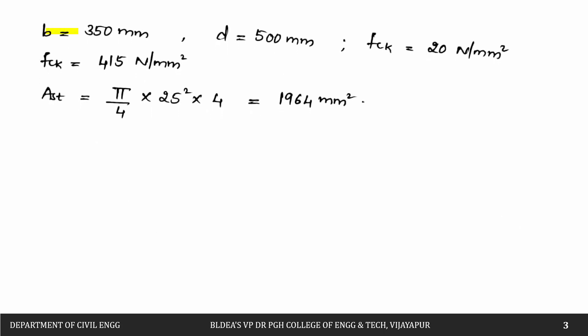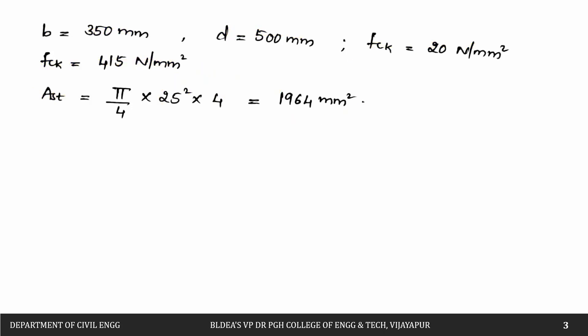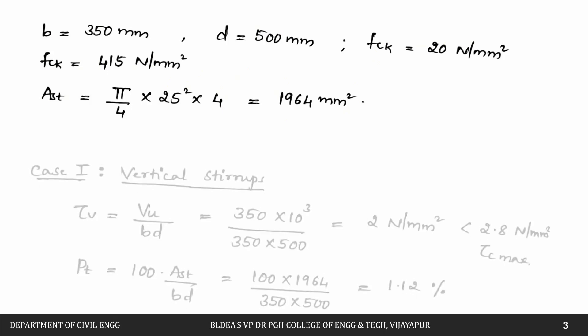Given data: b = 350 mm, effective depth d = 500 mm, fck = 20 N/mm², fy = 415 N/mm². Area of steel Ast = (π/4) × 25² × 4 bars = 1964 mm².